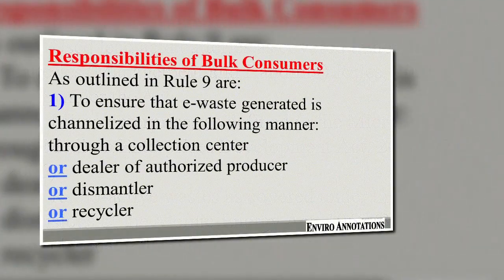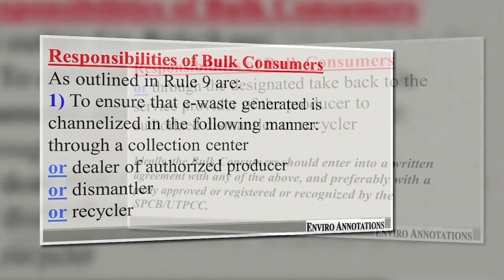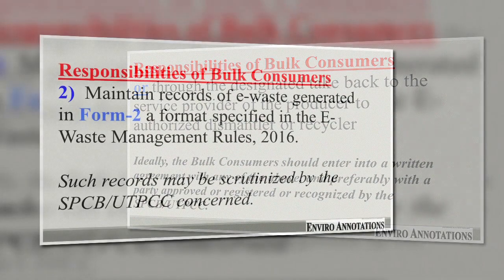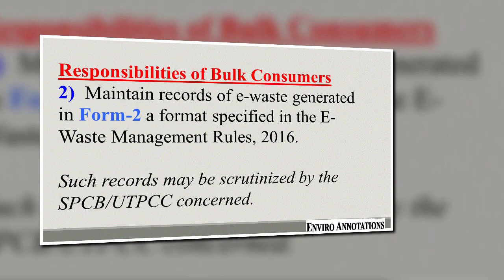The responsibilities of bulk consumers are clearly outlined in rule 9. First, to ensure that the e-waste generated is channelized through a collection center or a dealer of an authorized producer, dismantler or recycler, or through the designated take-back service provider of the producer. Ideally, bulk consumers should enter into an agreement with any of the above, preferably with a party approved or registered or recognized by the State Pollution Control Board (SPCB) or Union Territory Pollution Control Committee (UTPCC). Another responsibility is to maintain records of e-waste generated in Form 2 as specified in the e-waste management rules 2016; such records may be scrutinized by the SPCB or UTPCC.